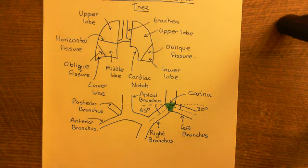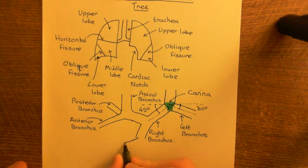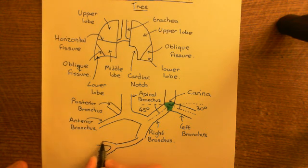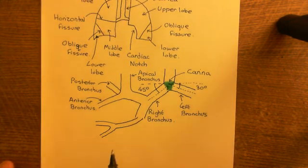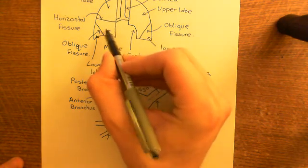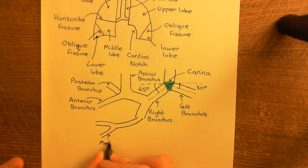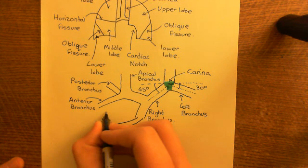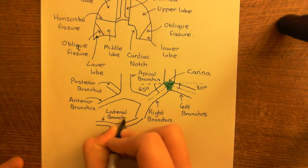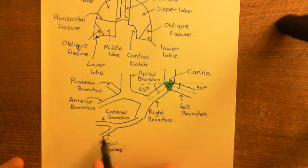Let's now turn our attention to the lower division going down to the middle lobe and then on to the lower lobe. What's going to come off here is a branch which supplies the middle lobe, and this will split into two. One is going to be called the medial bronchus, supplying the inner portion of the middle lobe. The other goes further out and supplies the lateral portion of the middle lobe — this is known as the lateral bronchus. So the branch supplying the middle lobe has a lateral branch and a medial branch.